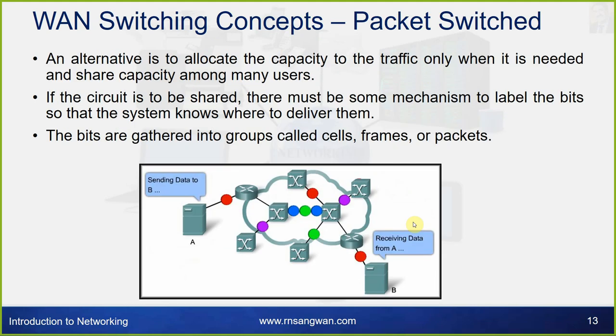Packet switching is like a transport or postal department — an alternative that allocates capacity to traffic only when needed and shares capacity among many users. If the circuit is shared, there must be some mechanism to label the bits so the system knows where to deliver them. The bits are gathered into groups called cells, frames, or packets. Packets are created and may travel through different paths, finally reaching the destination.